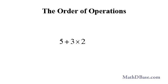For example, if we have this expression, should we add the 5 and 3 first to get 8, then multiply by 2 to get 16, or should we multiply the 3 and 2 first to get 6, and then add 5 to get 11?